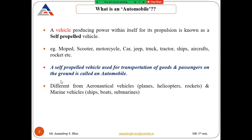Automobiles are different from aeronautical vehicles such as planes, helicopters, and rockets, and from marine vehicles such as ships, boats, and submarines. All three — automobiles, aeronautical vehicles, and marine vehicles — are self-propelled vehicles, but their operation differs. Automobiles run on land, aeronautical vehicles run in the air, and marine vehicles run on or under water.